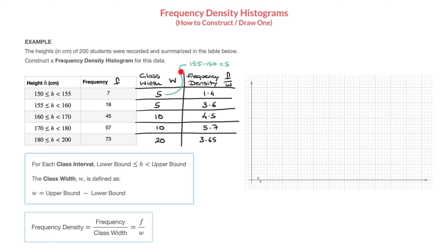These frequency densities, along with the class intervals for height, are all we need to construct the frequency density histogram. On the right-hand side, axes are already drawn. We'll always use the horizontal axis for the variable being observed — in this example, people's heights — so the horizontal axis represents height in centimeters. The vertical axis will always represent the frequency density, written as F over W.